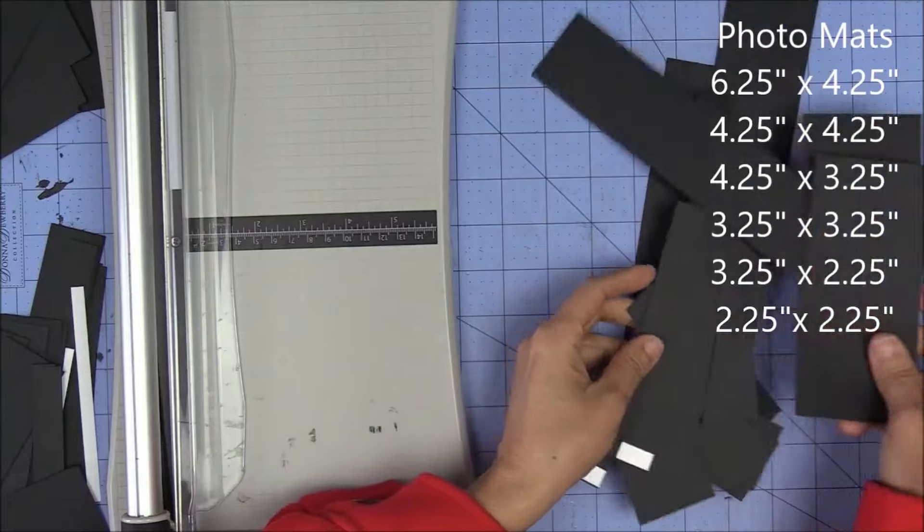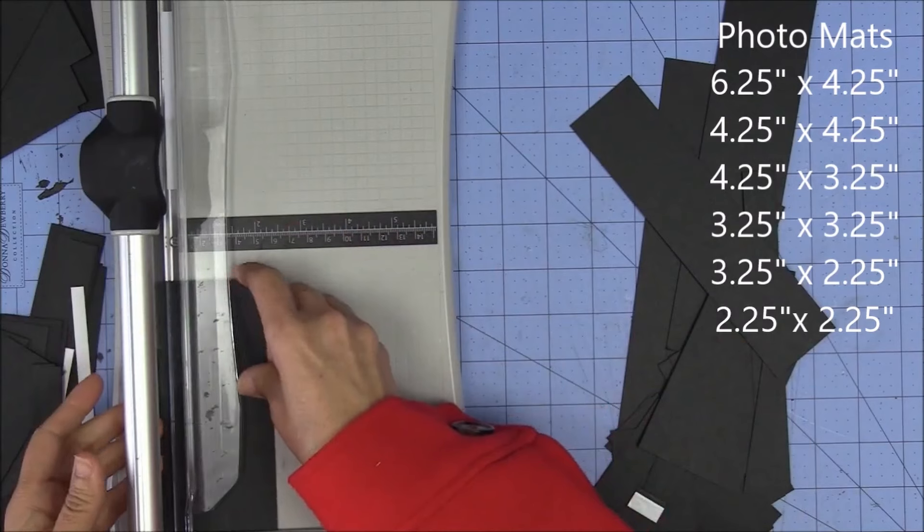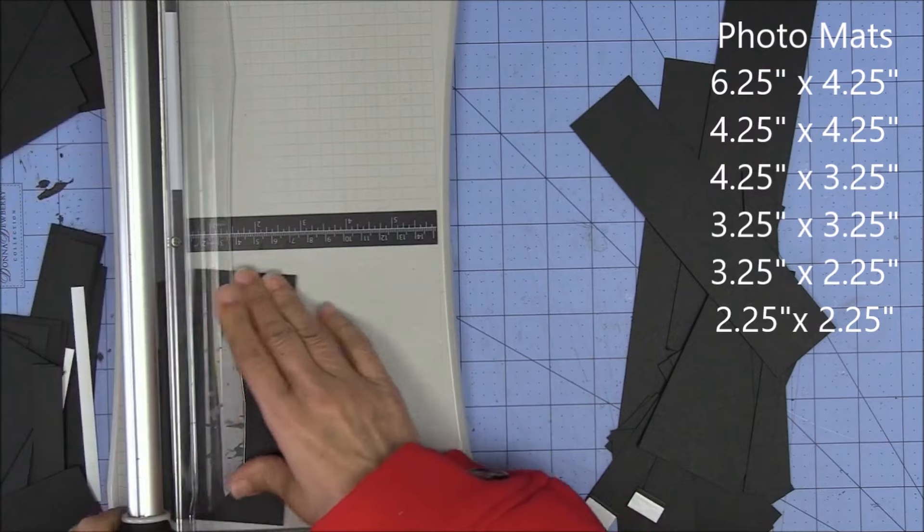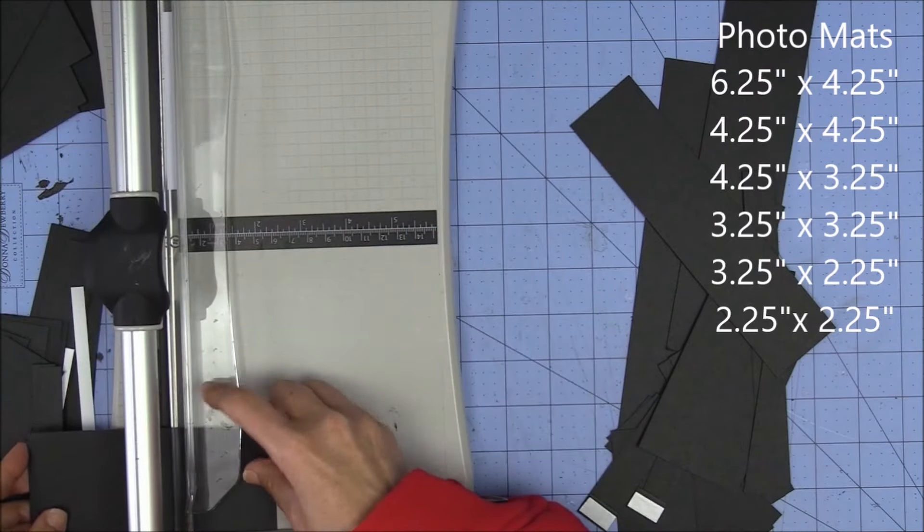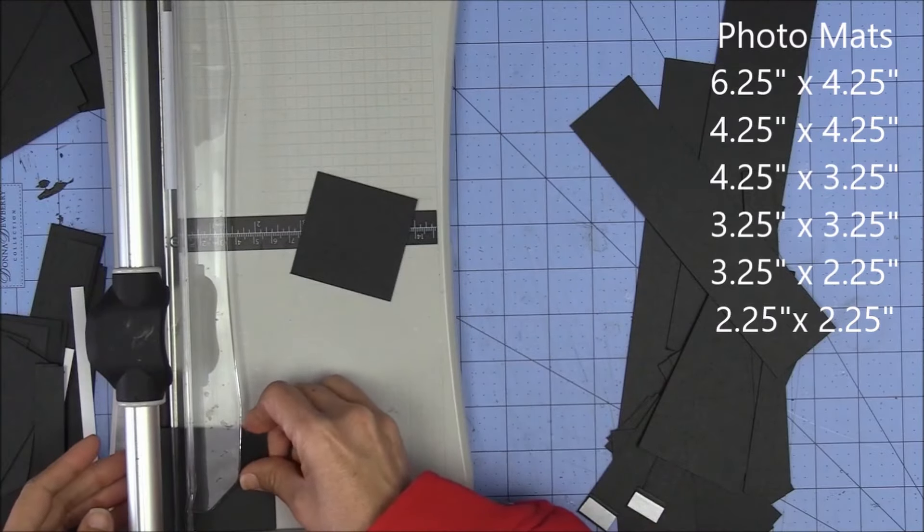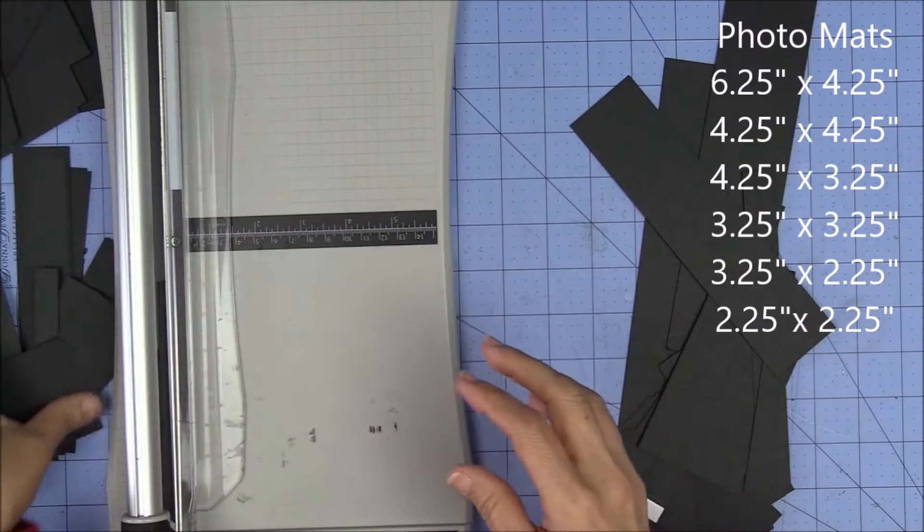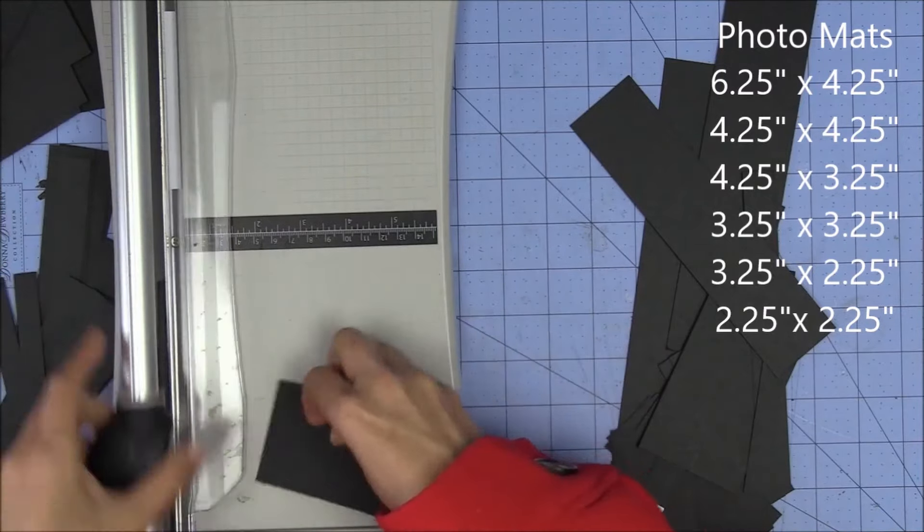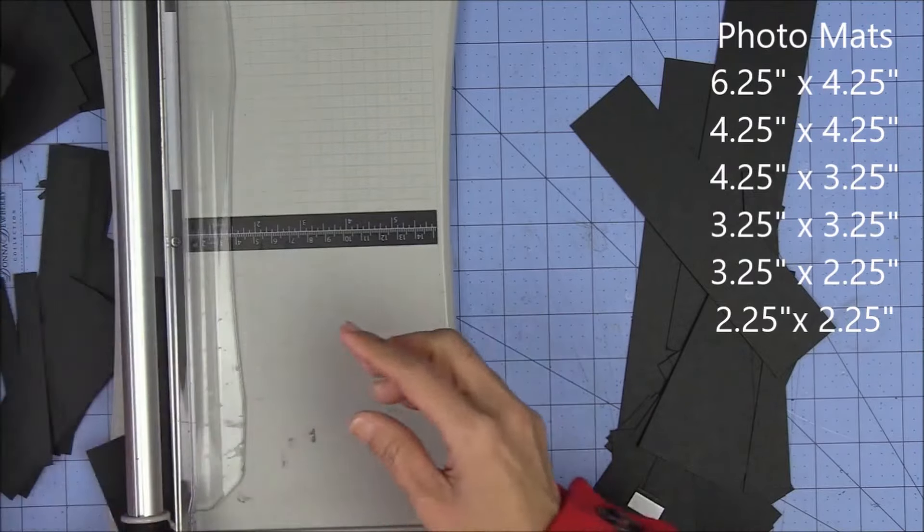My last size is 2 and a quarter by 2 and a quarter. And those are for my 2 by 2 photos. And I've got to tell you, those are my favorites. I love small photos. So 2 and a quarter by 2 and a quarter. Alright, done. And this one is looking like I can get 1 out of here. So let's do that. 2 and a quarter by 2 and a quarter. I have that.